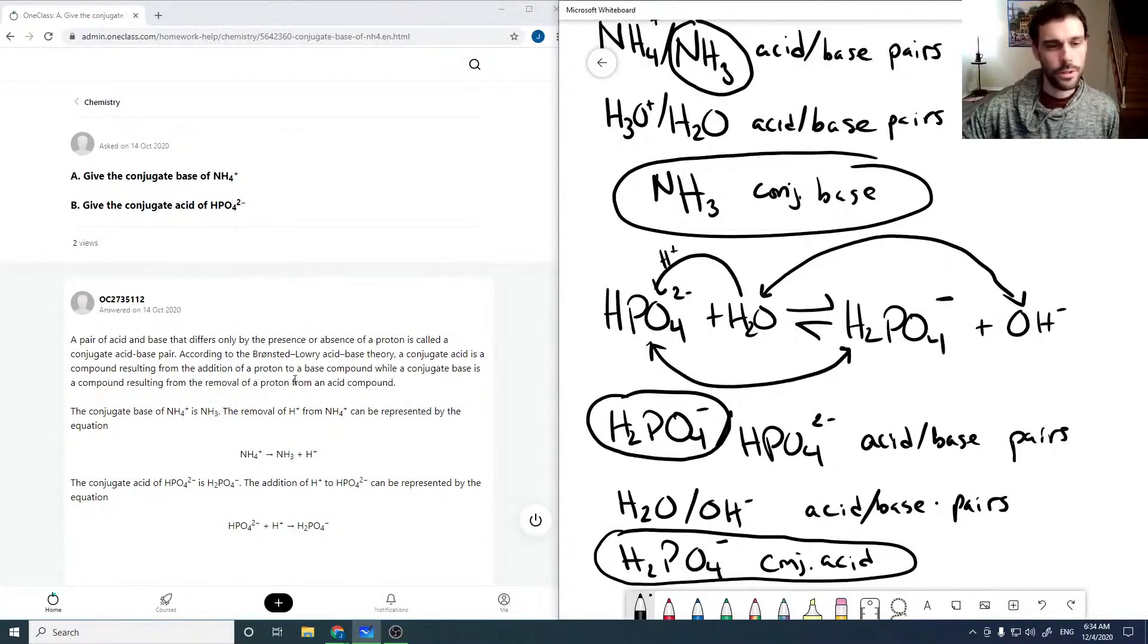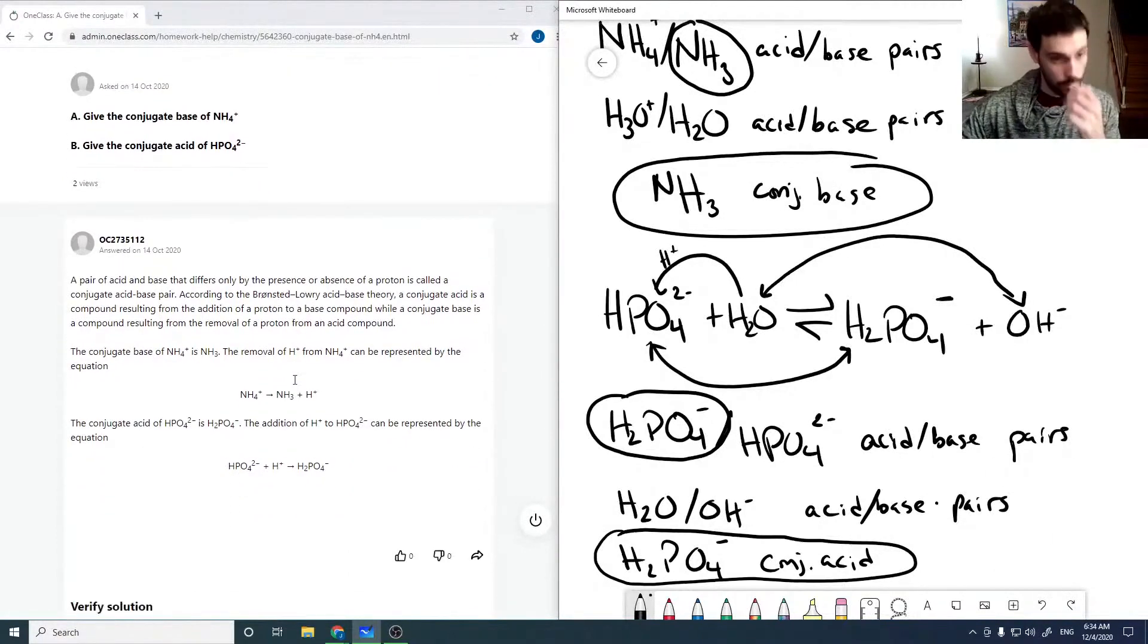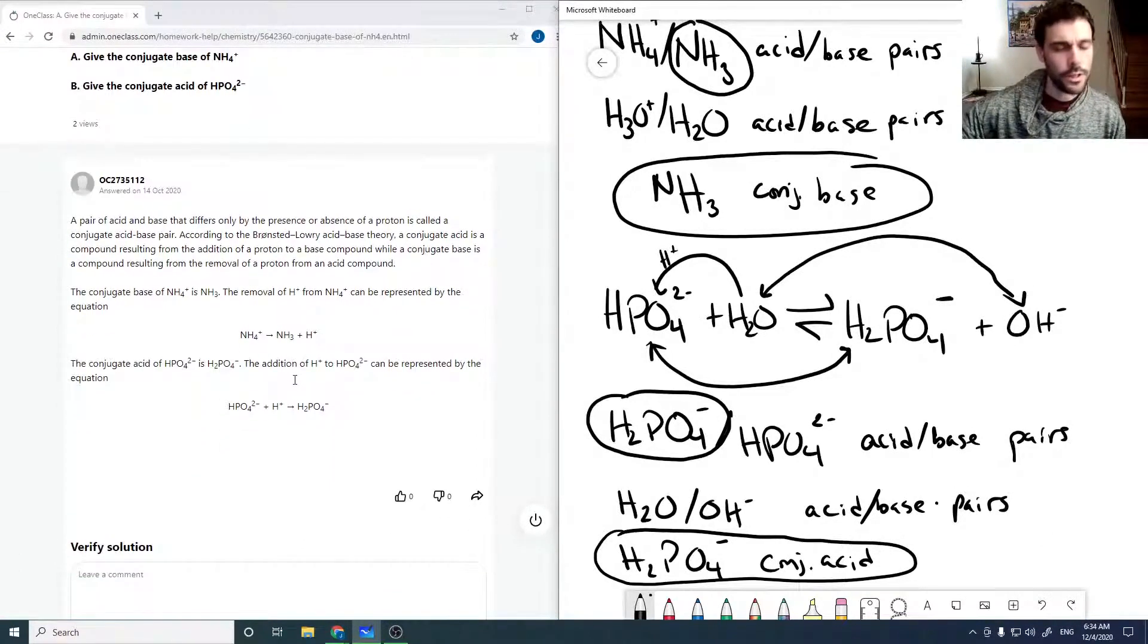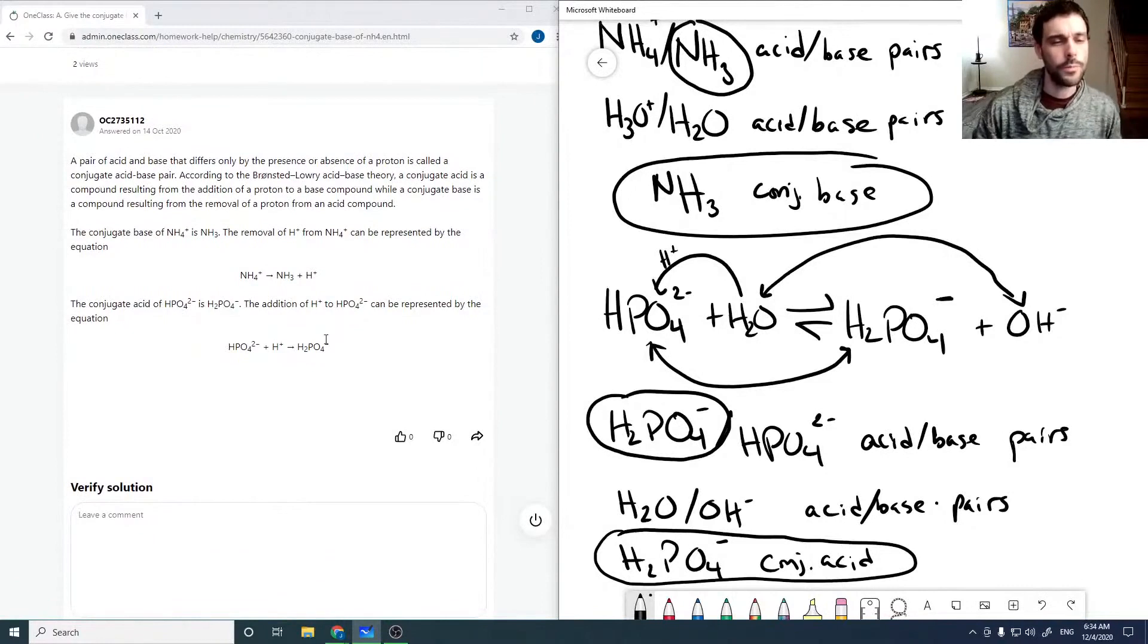Checking through the solution that's posted. A pair of acid and bases that differ only by one hydrogen is called the conjugate acid-base pair. The conjugate base of NH4+ is NH3 – that looks good. And the conjugate acid of HPO4 2- is H2PO4- – that looks good.